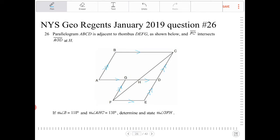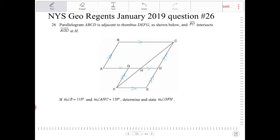And FC intersects AGD at H. Angle B is equal to 118. AHC is 138. So this angle here is 138. Determine and state angle GFH.